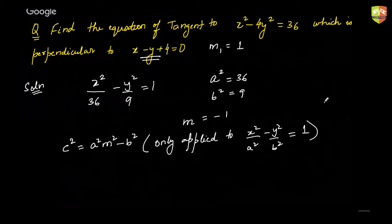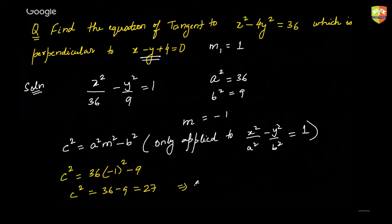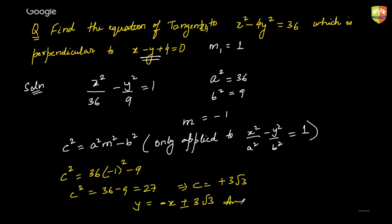This condition c² = a²m² − b² must only be applied to the standard form of the hyperbola. So c² = 36·(−1)² − 9 = 36 − 9 = 27, giving c = ±3√3. The desired equation of the tangents is y = −x ± 3√3. There are two tangents possible with the same slope.